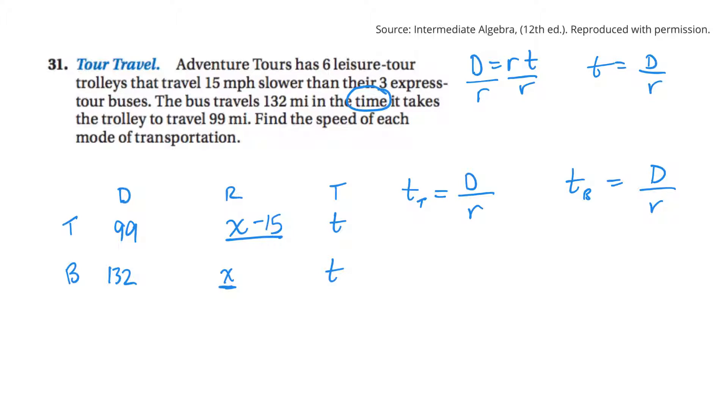So the distance divided by the rate is equal to the time of the trolley. And time of the bus is also equal to distance over rate. So the distance that the trolley travels, 99, divided by its rate is x minus 15. Okay, and that's the trolley. And the bus, its distance was 132 divided by its rate is just x. But this time is equal to this time. Therefore, 99 over x minus 15 must be equal to 132 over x.